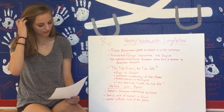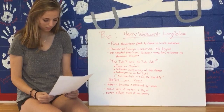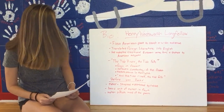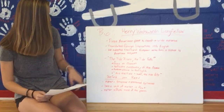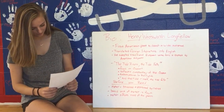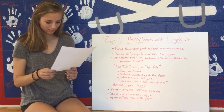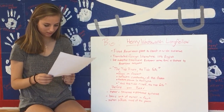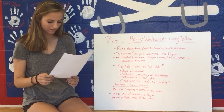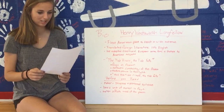The Tide Rises and the Tide Falls focuses on the ocean, and a quote from it is the repeating line 'the tide rises and the tide falls.' Broken meter and lines reflect the constancy of the ocean. It takes place in twilight, and the tide rising and falling represents the changing world.